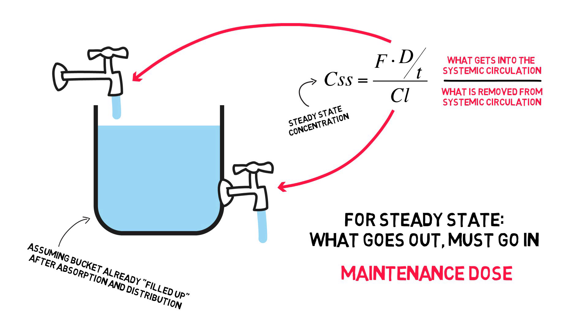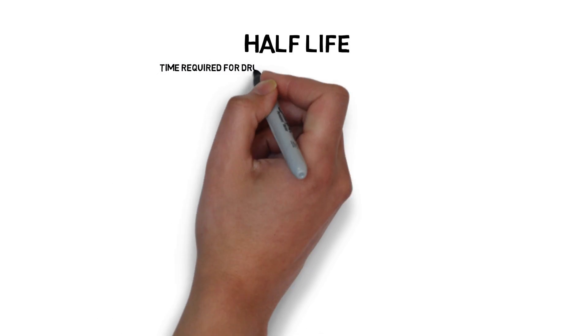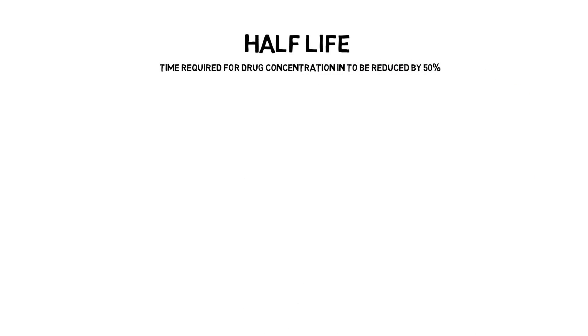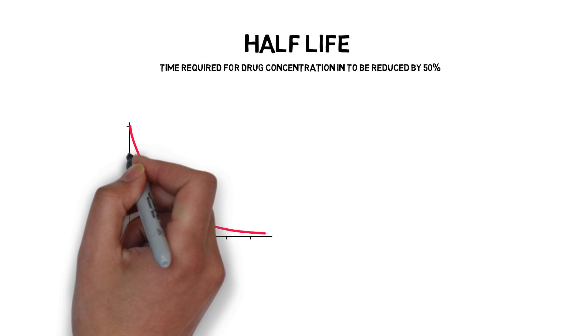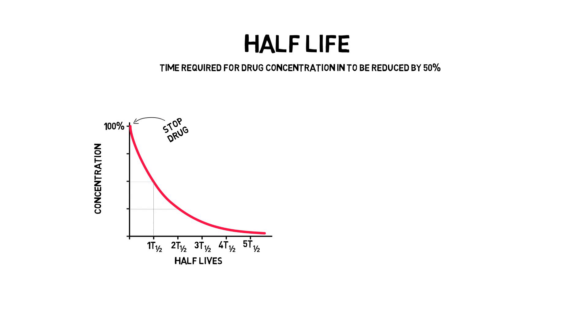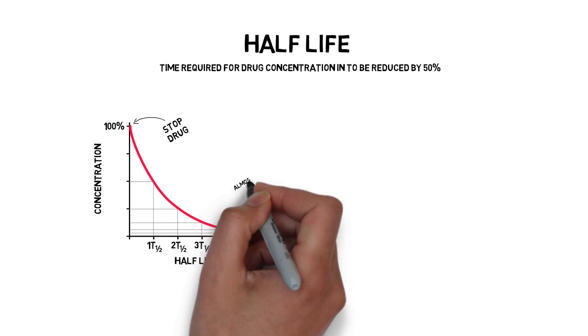So how long will it take to get into this steady state? That depends on the drug's half-life, which is a way of bringing the volume of distribution and clearance together. Half-life is defined as the period of time required for the concentration, or amount of drug in plasma, to be reduced by one half. So assuming we're at steady state, if we discontinue the drug: after one half-life, 50% will be cleared; after two, 75%; after three, 87.5%; after four, 93.75%; and after five half-lives, 96.875% of the drug will be cleared.